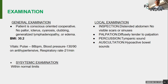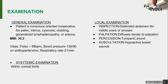On general examination: patient was conscious, oriented, cooperative, no pallor, icterus, or cyanosis, no clubbing, no generalized lymphadenopathy or edema. BMI was 30.2. Vitals: pulse 88 per minute, blood pressure 130/90, respiratory rate 21 per minute. Systemic examination was normal. Local abdominal examination: inspection showed a distended abdomen with no visible scars or sinuses. Palpation showed diffuse tenderness. Percussion revealed tympanic sound. Auscultation showed hypoactive bowel sounds.